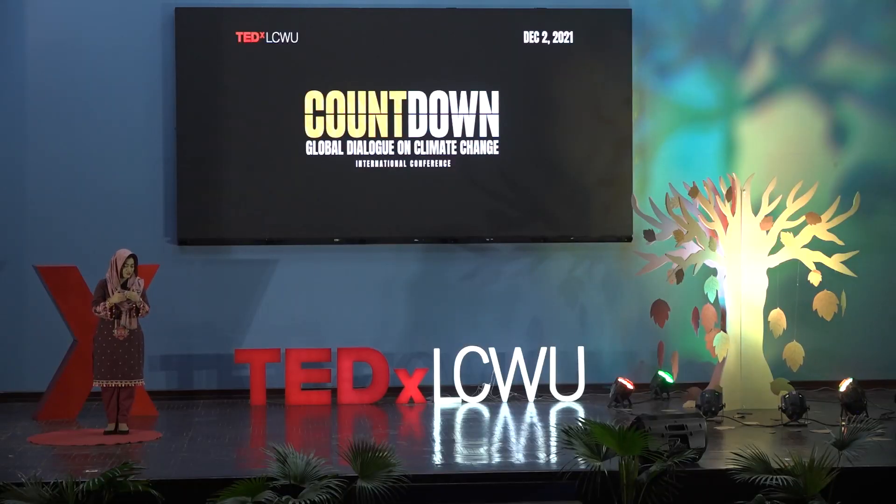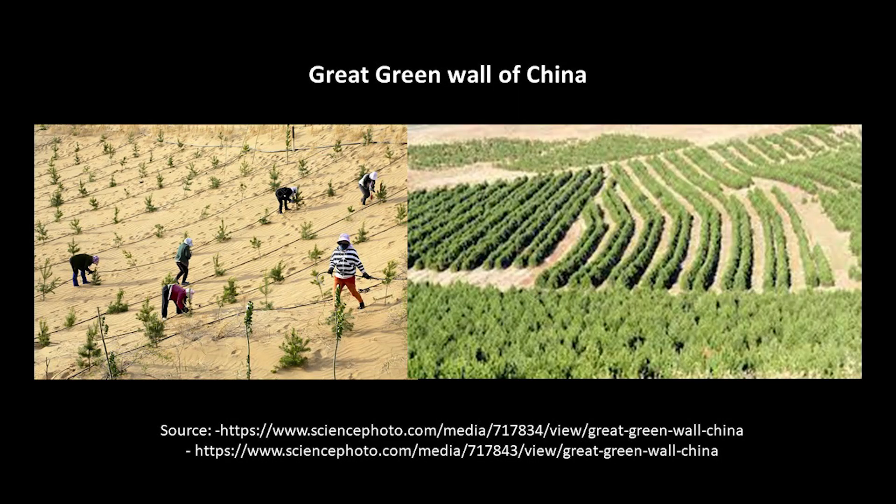On a larger scale, reforestation programs need to be prioritized. Globally, various successful efforts have been carried out to reverse the impacts of desertification through reforestation techniques. An excellent example is the Great Green Wall project of China, where a series of wind-breaking forests have been planted with the aim to hold back the expansion of the Gobi Desert. We, the city dwellers, can start by promoting the culture of indoor plantation in our homes and workspaces.